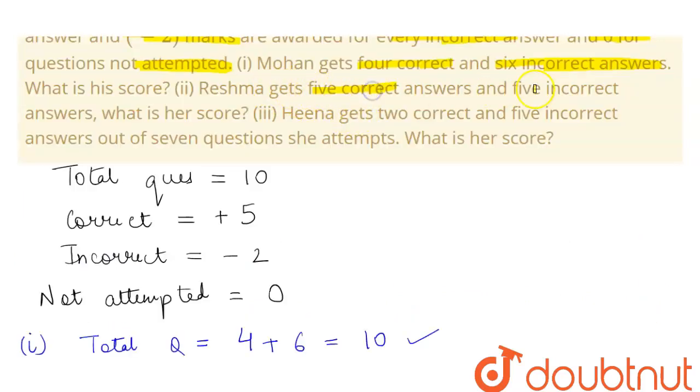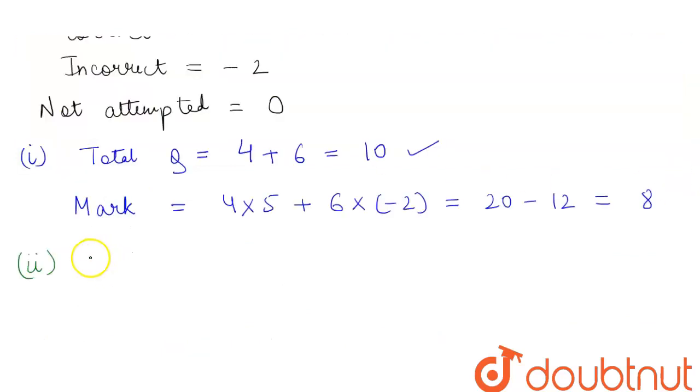Now secondly, we will see Reshma gets 5 correct answers and 5 incorrect answers. What is her score? So her total number of questions comes out to be 5 correct and 5 incorrect, which means 5 plus 5, which is equal to 10. So this is also satisfied.